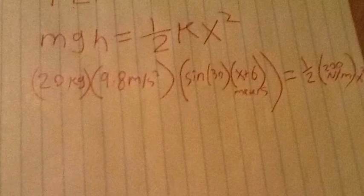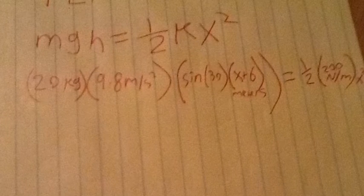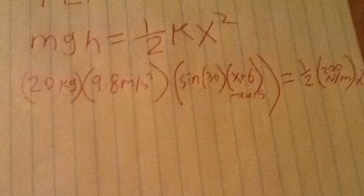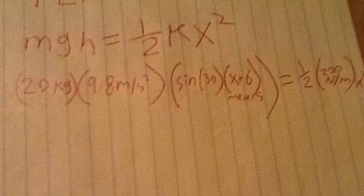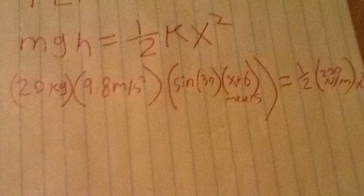Because the block is at rest at the point of spring compression, there is no final kinetic energy. Instead, all the initial potential energy works on the spring. So, mgh equals one half kx squared, where 20 kilograms equals m, g equals 9.8 meters per second squared, h was as shown as sine of 30 degrees times x plus 6 meters, k is 200 newtons per meter, and x squared is going to be solved for in meters.